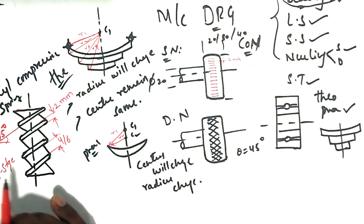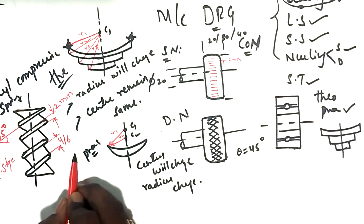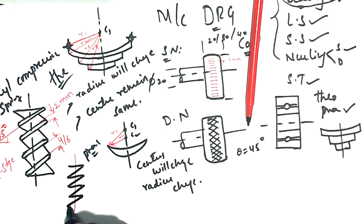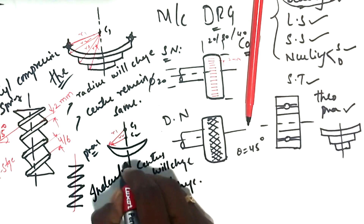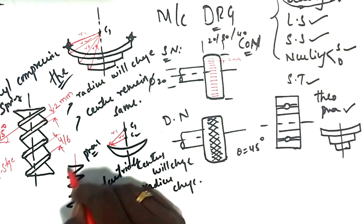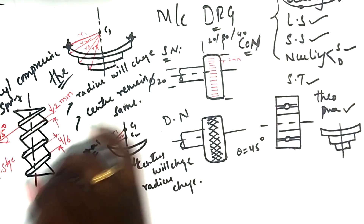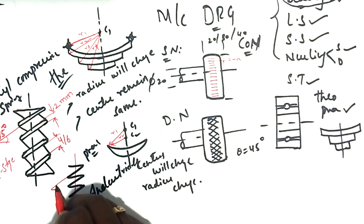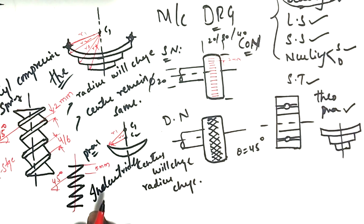This detailed 45-degree construction is the theoretical representation of a compression spring. Practically and industrially, we simply draw an axis line followed by simple horizontal zigzag lines — 1, 2, 3, 4 horizontal strokes. This practical conventional representation takes very little time compared to the theoretical method. The angle is 45 degrees and the gap between strokes is your choice, maybe 5 mm.